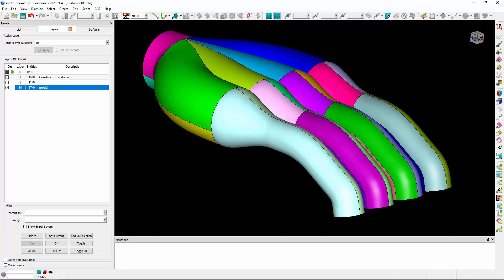So here is a model of an intake in PointWise. And each one of the colors is actually a different quilt in this model. And again, because this model is watertight, if we mesh this model, each one of those quilts will receive a single domain and the surface mesh will be watertight as well.